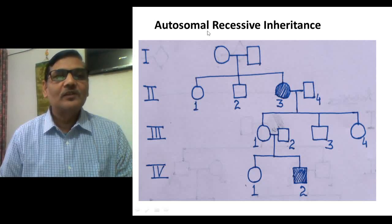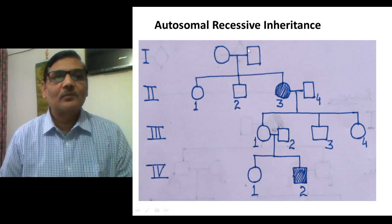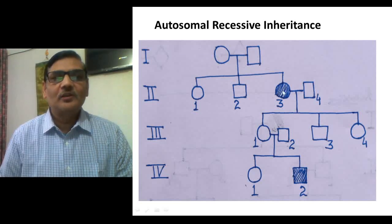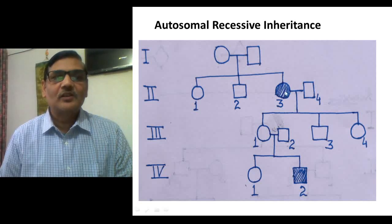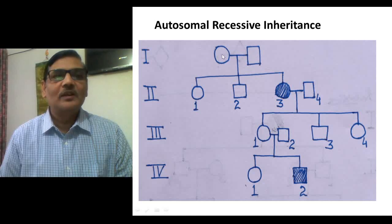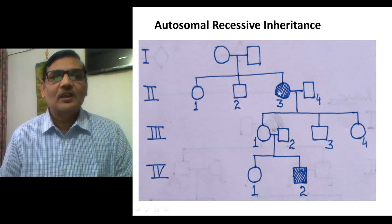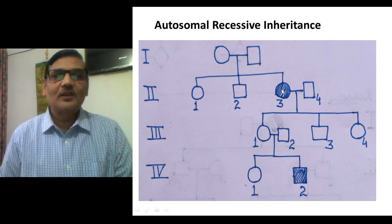In a pedigree, the round structure represents a female and the square represents a male. A colored symbol — for example, the third individual of the second generation — shows the disease. The trait appearing in this individual means this person is homozygous recessive. In such a case, the parents are obligate carriers, meaning they are definite carriers, as both mother and father inherited the recessive allele to this daughter, causing her to express the disease.